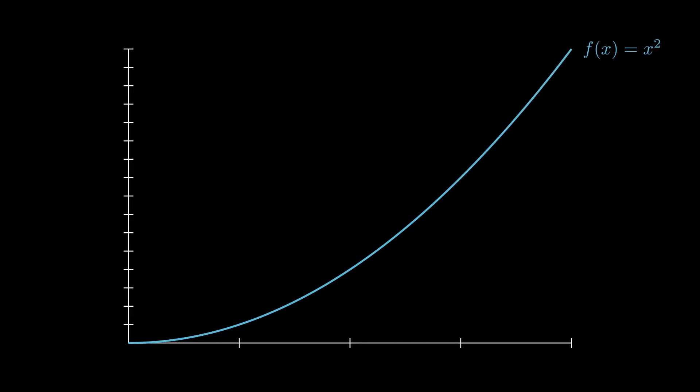So, functions that either look something like this, which we could even call strictly convex, or like this, which we would just call convex.